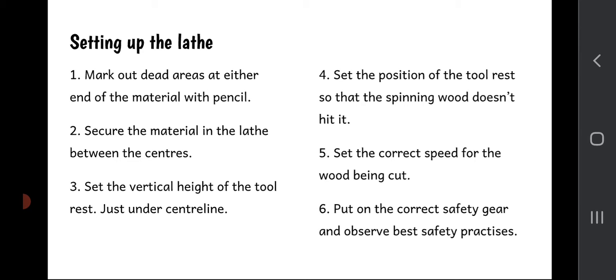There are six steps to setting up the lathe for turning. First, mark out the dead areas at either end of the material with pencil - you don't want to be turning the very ends because they're too close to the spinning metal of the machine tool. Second, secure the material in the lathe between the two centers. Third, set the vertical height of the tool rest to be just below the center line. Fourth, set the position of the tool rest so the spinning wood doesn't hit it, and turn the lathe over by hand to make sure no part of the wood fouls or connects with the tool rest. Fifth, set the correct speed for the wood being cut. Finally, put on all correct safety gear and observe best safety practices: eye protection, apron, knowing where the emergency stop button is, and having a general look over the lathe to make sure nothing is broken, no parts are loose, or nothing else is suspicious about the machine.